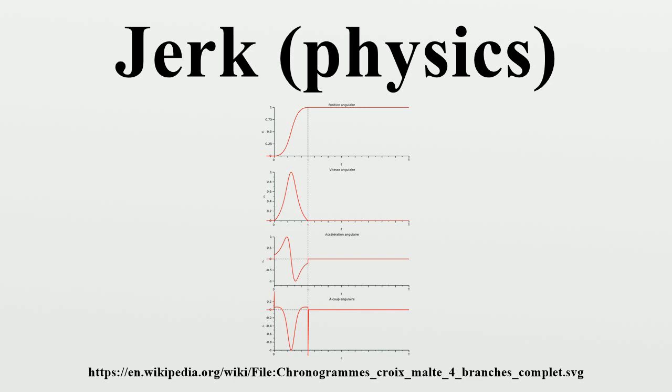Jerk is defined by any of the following equivalent expressions, where a is acceleration, v is velocity, r is position, and t is time. Jerk is a vector, and there is no generally used term to describe its scalar magnitude.